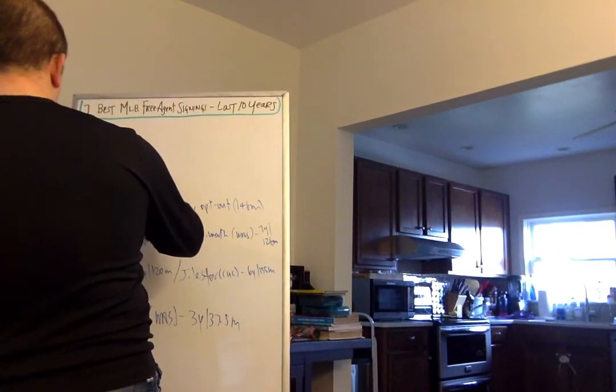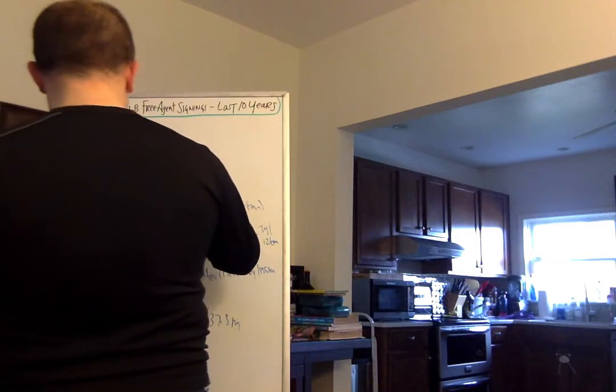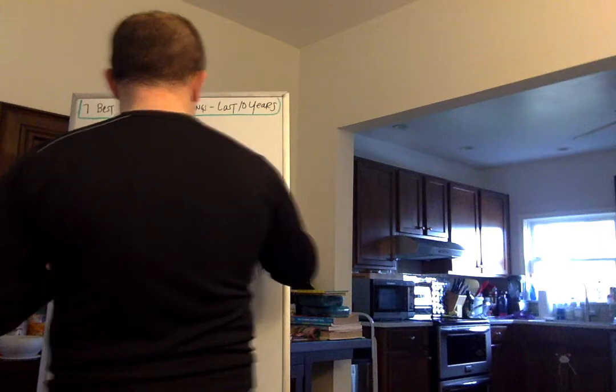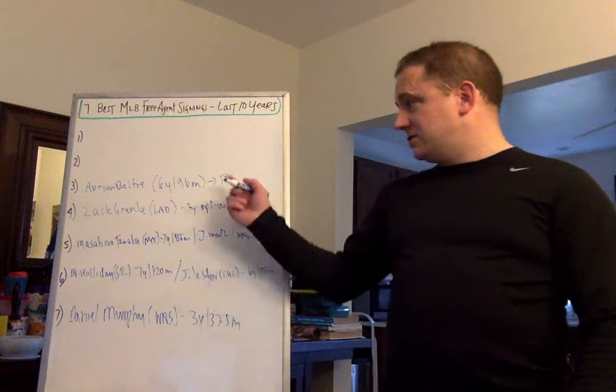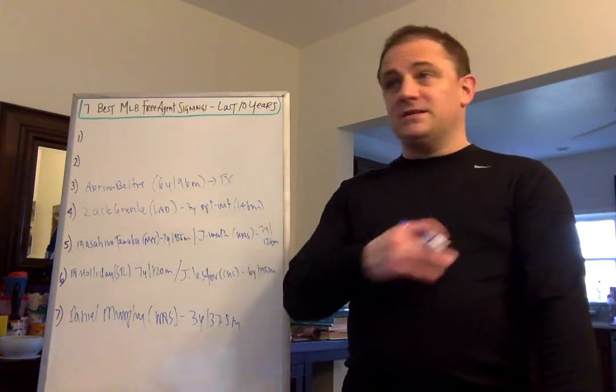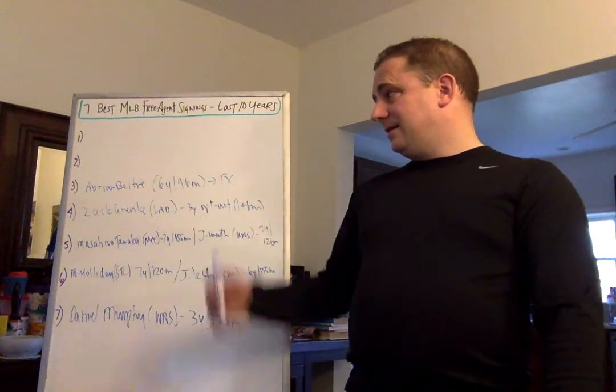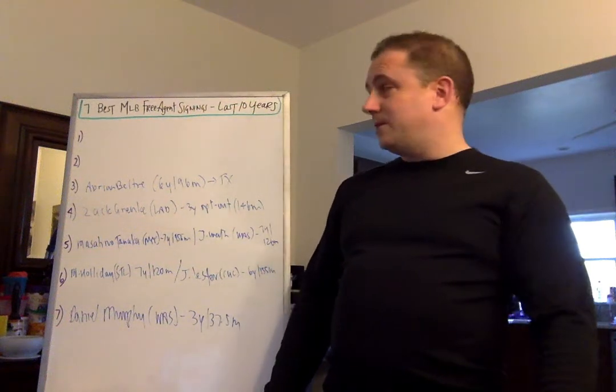Number three. A couple of older guys now, but ridiculous value. I would sign up for this any day of the week. Adrian Beltre. Six years, $96 million for a $16 million a year average for Texas Rangers. That's the guy that hits 25, 30, 35 home runs every year. He's going to be going to the Hall of Fame. 500 home run guy. He was remarkable. That's one of the best values in modern Major League Baseball history.